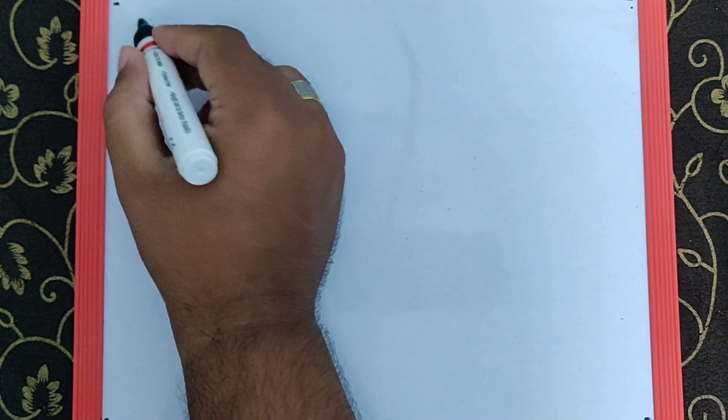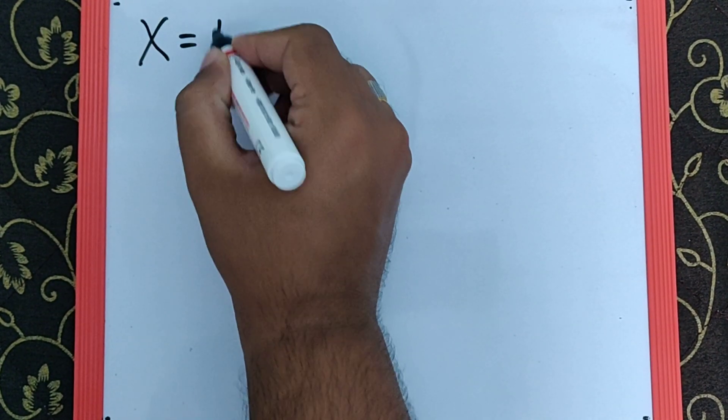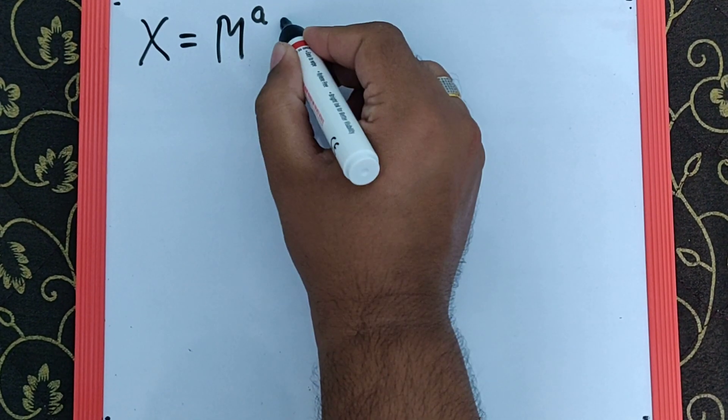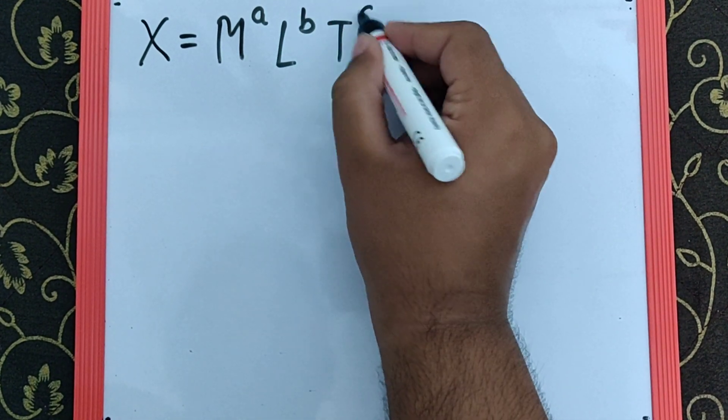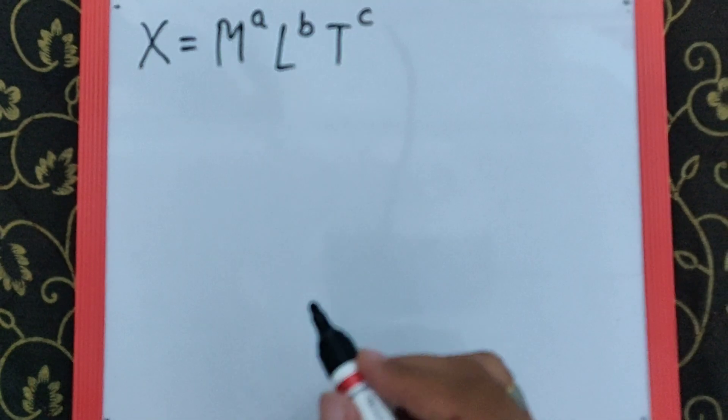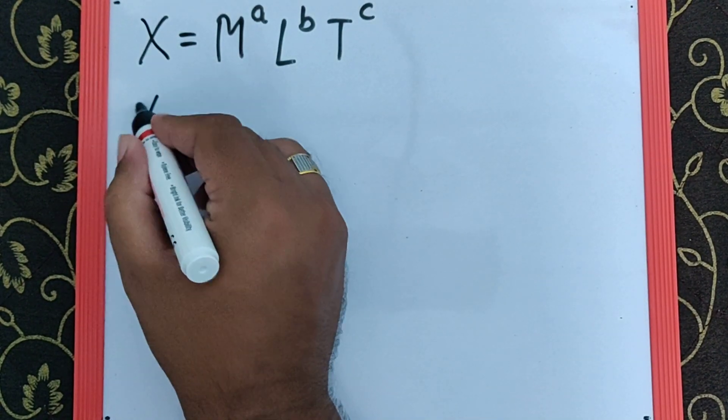The next question says, the formula of a physical quantity is represented by X equals M raised to a, L raised to b, and T raised to c. The error in percentage of M,